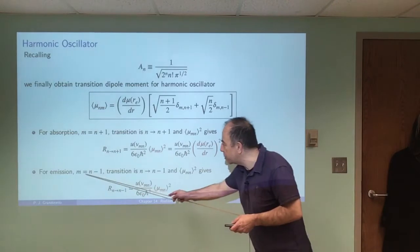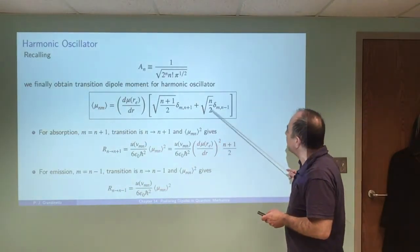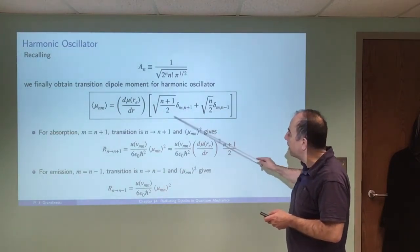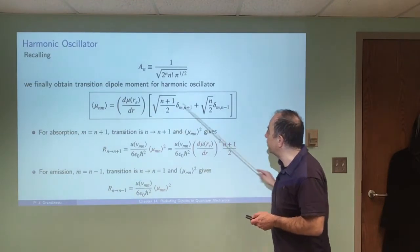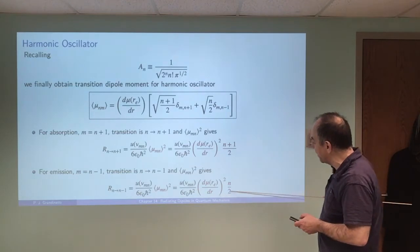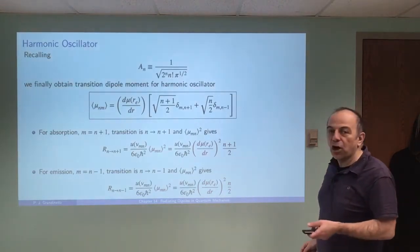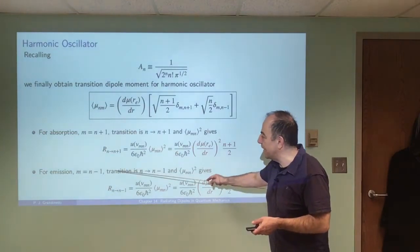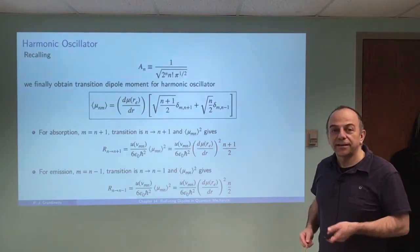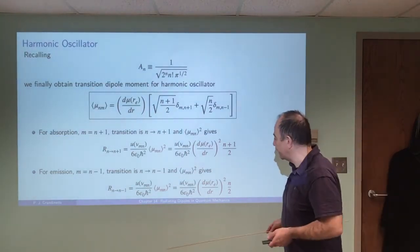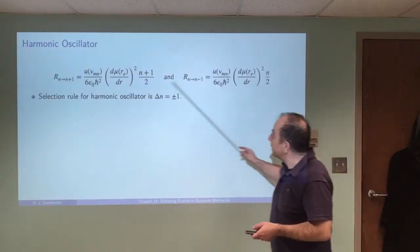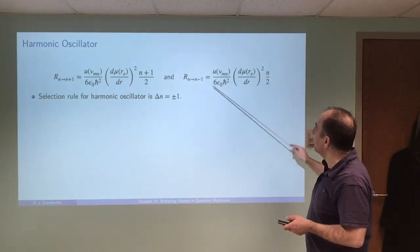We can do the same for emission, where m is equal to n minus one. When that term is non-zero, the other term goes to zero. Substituting into our rate expression and squaring, we get the emission transition rate. So we have solved for the transition rate for both absorption and emission in our vibrating diatomic molecule, which requires a changing electric dipole moment. The selection rule for the harmonic oscillator is Δn = ±1.